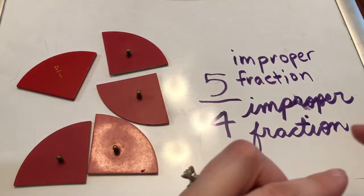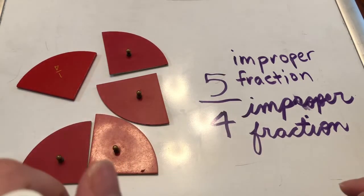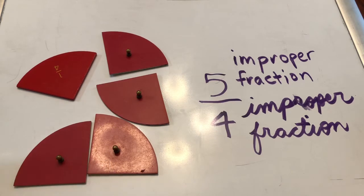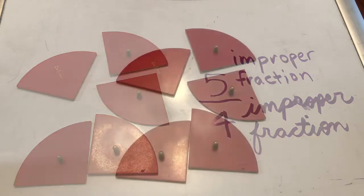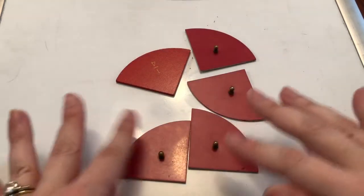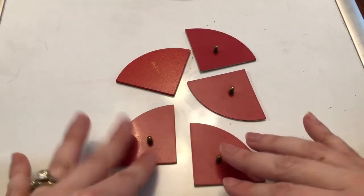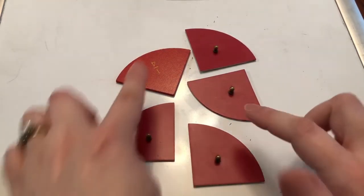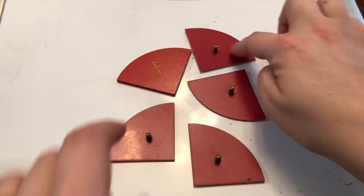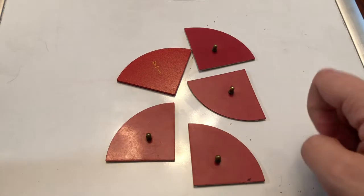We can take an improper fraction and turn it into what is called a mixed number. Let's take a look at how to do that. I still have my five fourths — one, two, three, four, five. Five fourths.